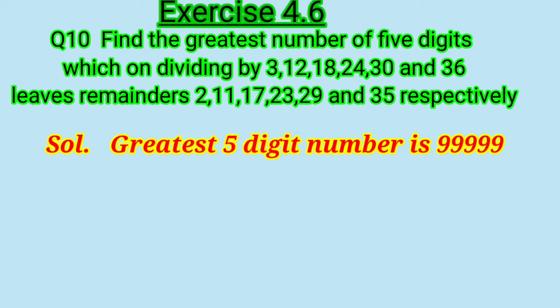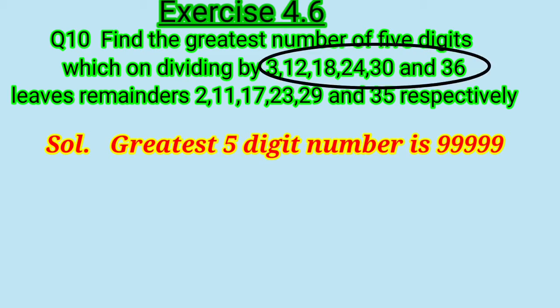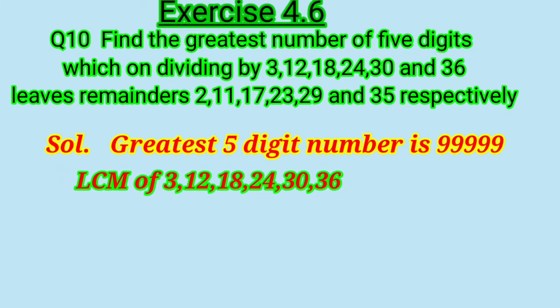It is 99,999. Now it is given in the question that on dividing that greatest 5-digit number by 3, 12, 18, 24, 30 and 36 there are some remainders. So the first thing is we will find the LCM of these numbers. On finding LCM by prime factorization, the result is 360.